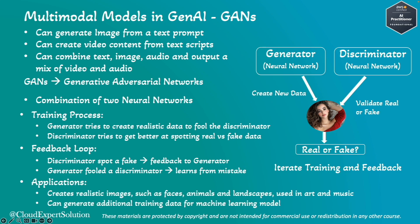And finally, the Prediction. GAN can be used in multiple different applications. It can create realistic images such as faces of humans or animals, or even landscape pictures. It can also be used in art and music creation. Additionally, it can generate additional training data for machine learning models — for instance, if your training dataset is missing some representation or you simply need to generate more data, GAN can help in that case.